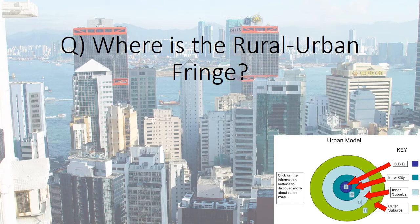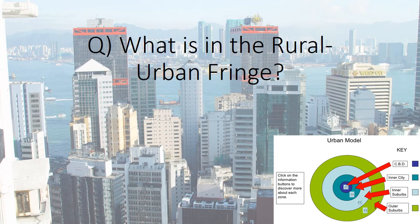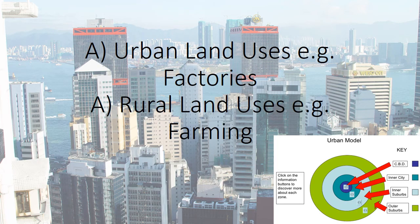Where is the rural urban fringe? Right at the edge of the city. What is the rural urban fringe? Urban land uses for factories, and rural land uses for things like farming. What is the urban key?